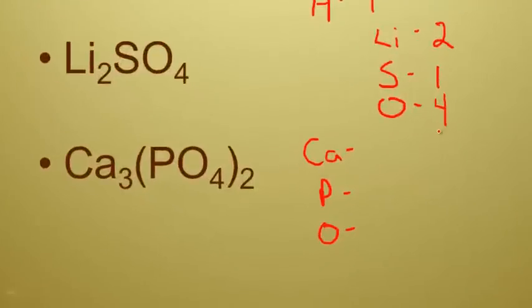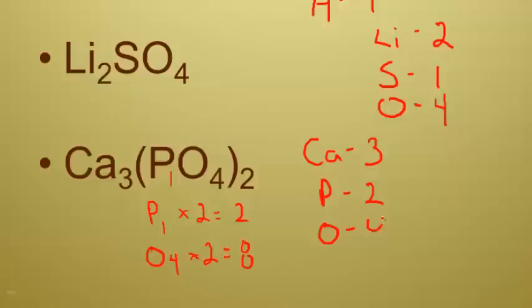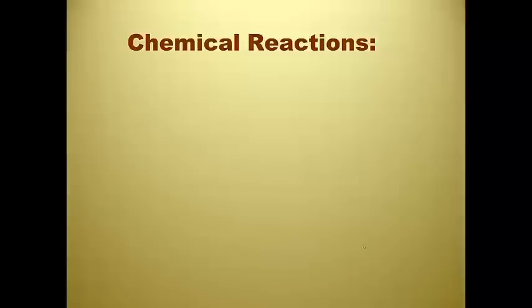When we take a look at calcium phosphate, I see three calciums. And then this two subscript has to actually get distributed into everything for phosphate. Since there's an understood to be a one on phosphorus, it's P1 times 2 tells you that there's two phosphoruses. For oxygen, it's O4 times 2 is equal to 8 oxygens.